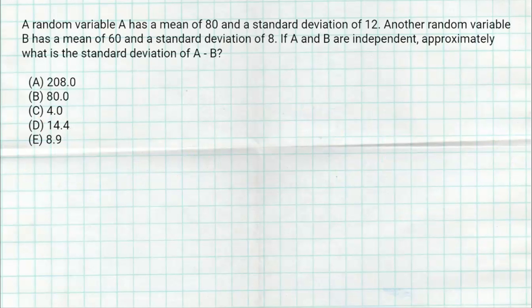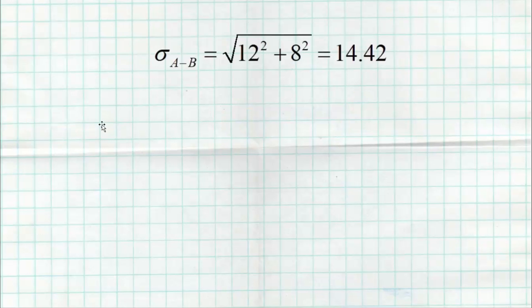Question 27 is one many kids get wrong because they don't remember the rules for combining standard deviations. You are not allowed to combine standard deviations directly — you must combine variance, which is standard deviation squared. For A, the standard deviation is 12, so squared gives the variance for A; 8 squared gives the variance for B. Even though we're looking at the difference A minus B, variance always builds — so we add the variances. Then we take a square root to convert back to standard deviation. That's how we get 14.4.